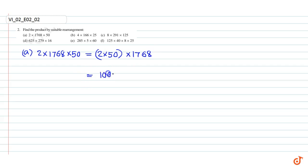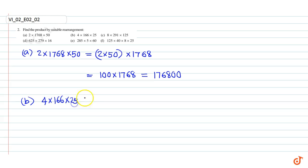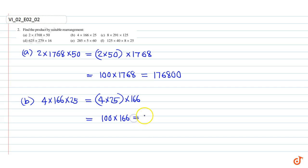This is equal to 100 into 1768, which is equal to 1,76,800. Part b: 4 into 166 into 25. This is equal to 4 into 25 into 166, which is equal to 100 into 166, which is equal to 16,600.